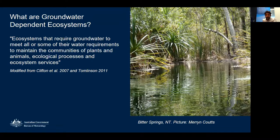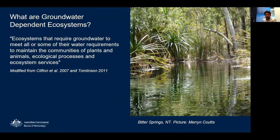When we talk about GDEs, we're talking about things ranging from rivers and lakes and wetlands, to vegetation that accesses groundwater via its roots, as well as caves and aquifers. One example shown here is Bitter Springs in the Northern Territory — a GDE and a popular tourist destination.